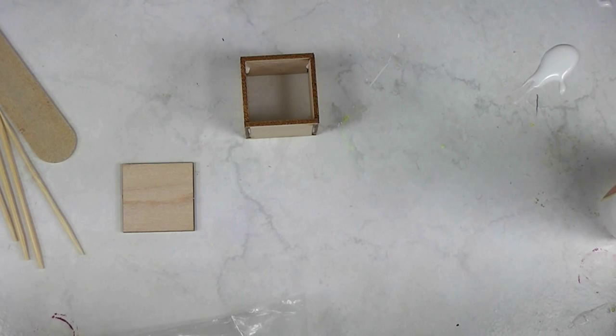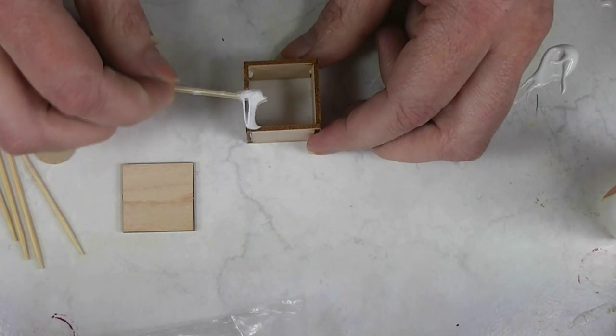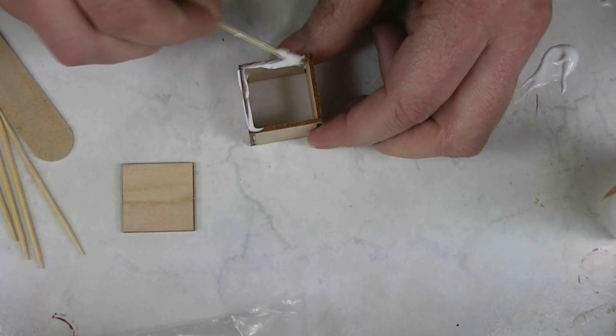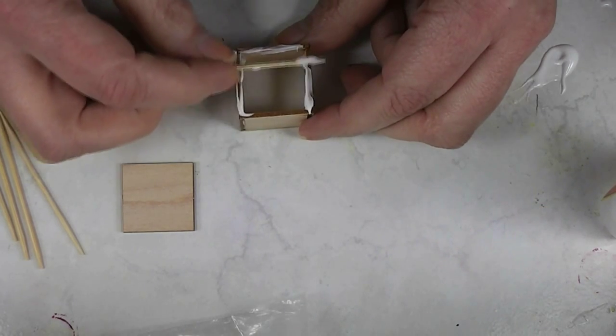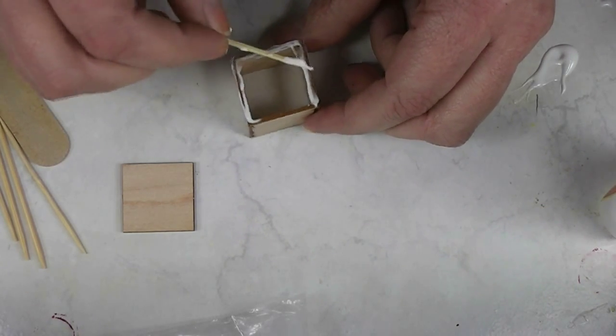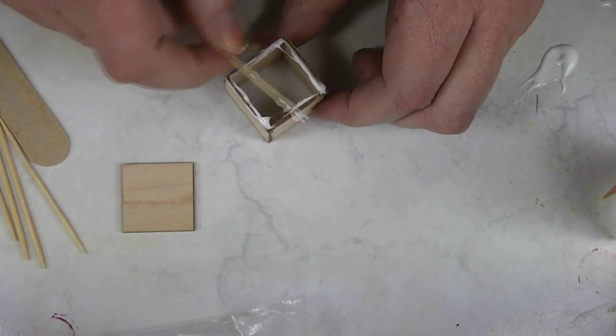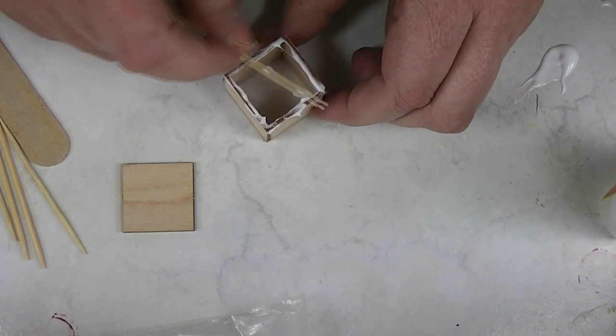There. Make sure this is glued. This is nice and straight. I'm going to glue my bottom onto this. By gluing the bottom on, this way I know that I've got everything nice and square before the glue dries.